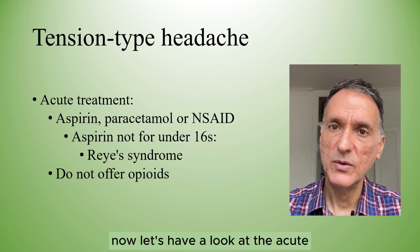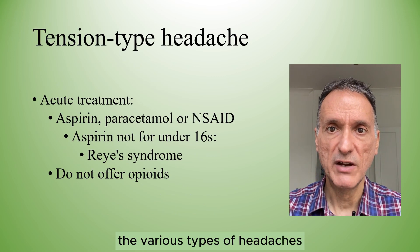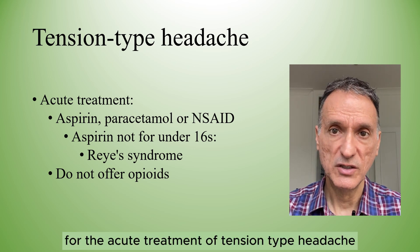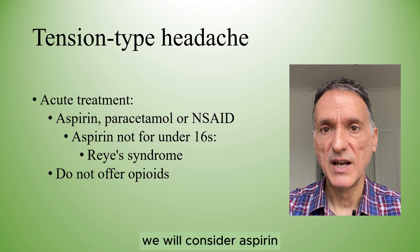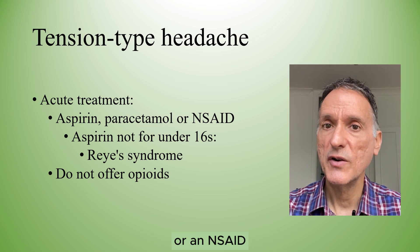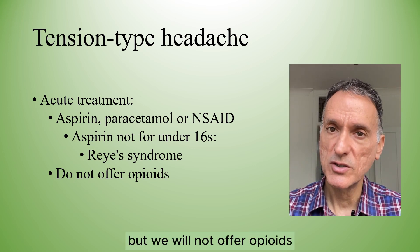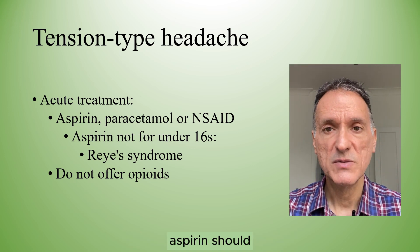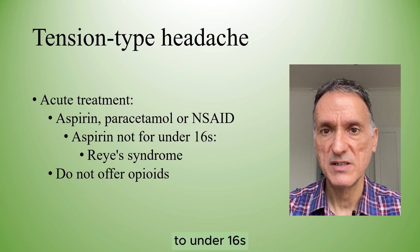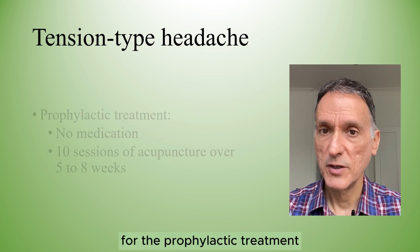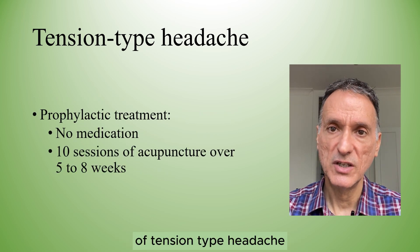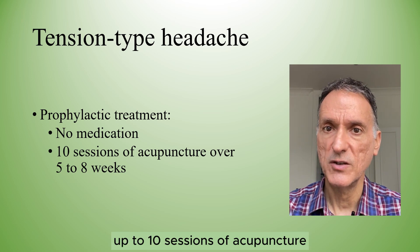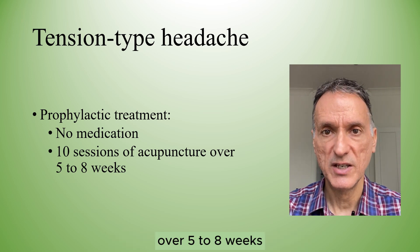Now let's have a look at the acute and prophylactic treatments of the various types of headaches. For the acute treatment of tension type headache, we will consider aspirin, paracetamol or an NSAID, but we will not offer opioids, and because of Reye's syndrome, aspirin should not be offered to under-16s. For the prophylactic treatment of tension type headache, we will consider a course of up to 10 sessions of acupuncture over 5 to 8 weeks.